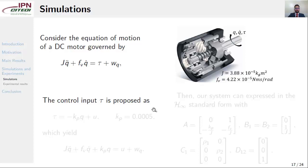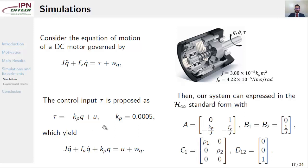The control input tau is proposed as here, which yields this system. Notice that we have a second-order linear time invariant system in the presence of our control input u. Our system can be expressed then in the H-infinity standard form with a, b1, b2, c1, d12 as shown here. Notice that we have rho1 and rho2 as the same parameters.